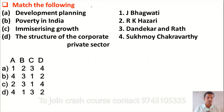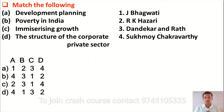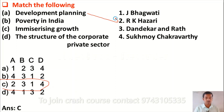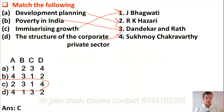The next question is a match-the-following: Development and Planning is matched to RK Azari; Poverty in India is matched to Dandekar and Rath; Immiserizing Growth is matched to J. Bhagwati; and The Structure of the Corporate Private Sector is matched to Sukhamoy Chakravarty. So option C is the correct answer.